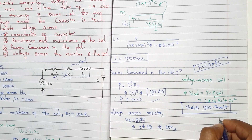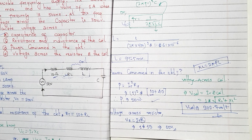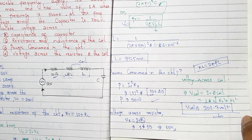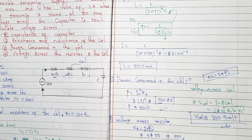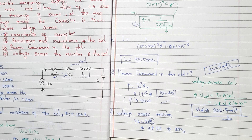The voltage across the coil comes out to 302.7 volts. That is the voltage consumed and flowing through the coil. Thank you for watching my video. I will share the video in the next few days.